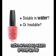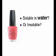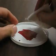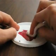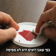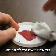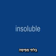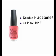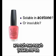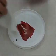Another example is nail polish. Is it soluble in water? As we can see, it is not soluble. However, nail polish is soluble in acetone — nail polish remover.